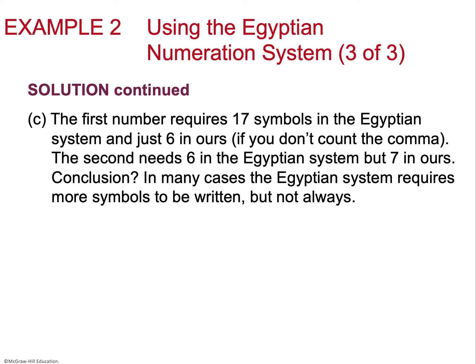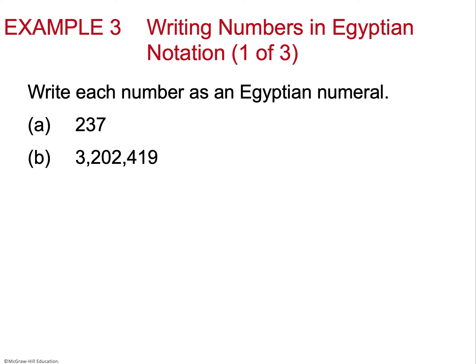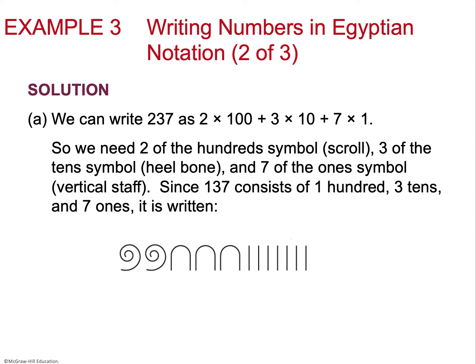Converting to Egyptian numerals: to write 137, I expand it — two 100s, three 10s, and seven 1s — then use two symbols for the 100s, three for the 10s, and seven for the 1s. I'm taking the expanded form and writing it as 137 in Egyptian hieroglyphics, with the added benefit of learning a bit of history.